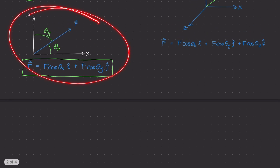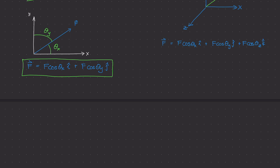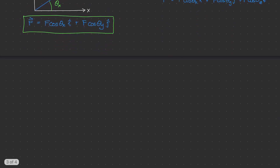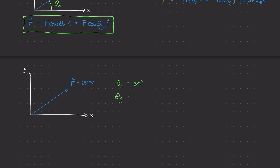Let's do a quick numerical example in 2D to confirm that using cosine of theta_x and cosine of theta_y gives the same answer as before. We have a force vector F with a magnitude of 250 newtons. Given in the problem: theta_x is 30 degrees — the angle from the positive x-axis to the force — and theta_y is 60 degrees — the angle from the positive y-axis to the force.